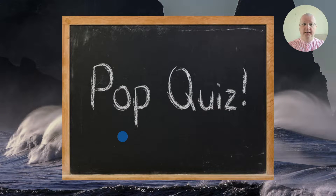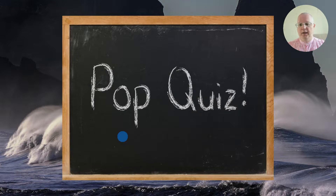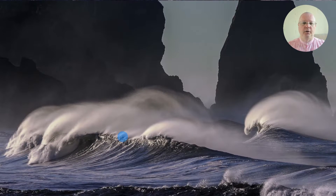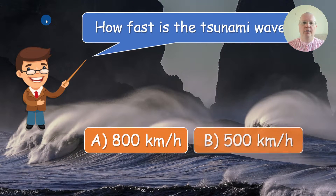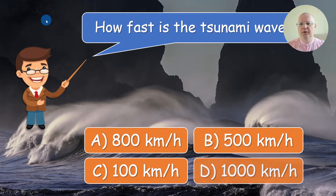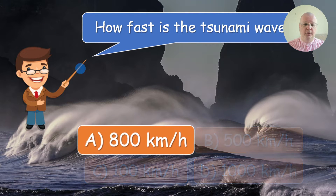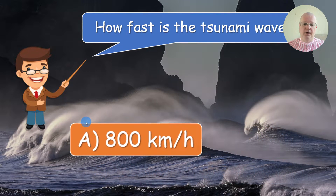Pop quiz! You invite a student from each team and they take part in a pop quiz — the winner gets a point. Question number one: how fast is the tsunami wave? The correct answer is 800 kilometers per hour.